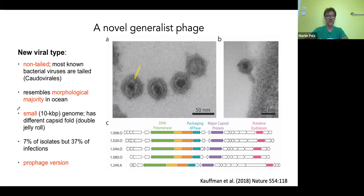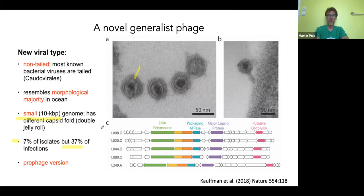These viruses have very small genomes — about 10 kilobase pairs — which is really unusual. Most phages typically have at least 30 kb, often 50, sometimes several hundred kb in genome size. They were only about 7% of the isolates but represented nearly 40% of the infections. There's also a prophage version of this virus that was known before.